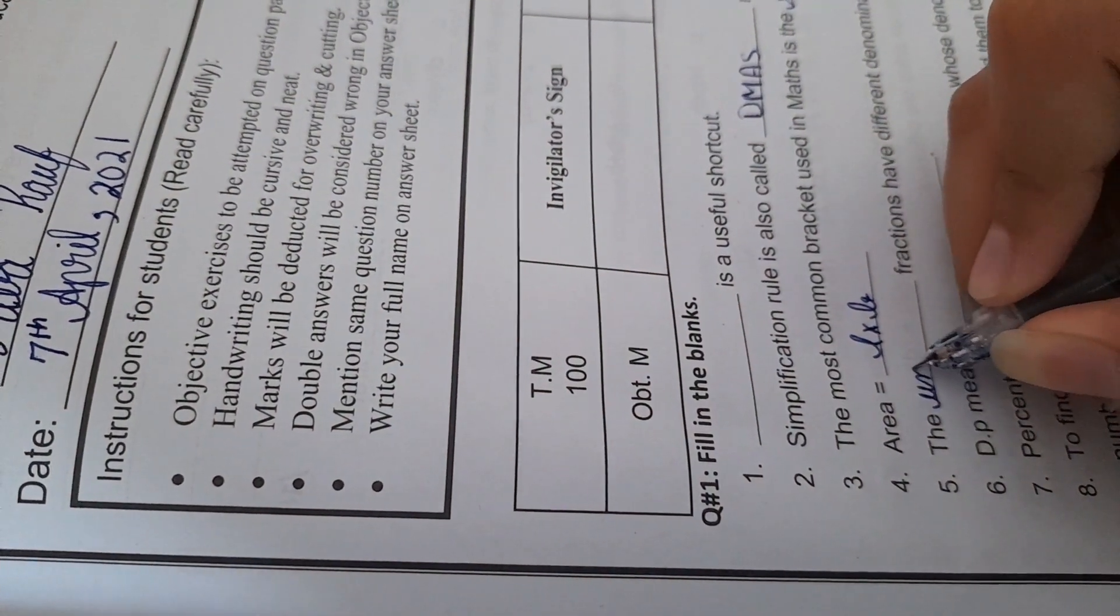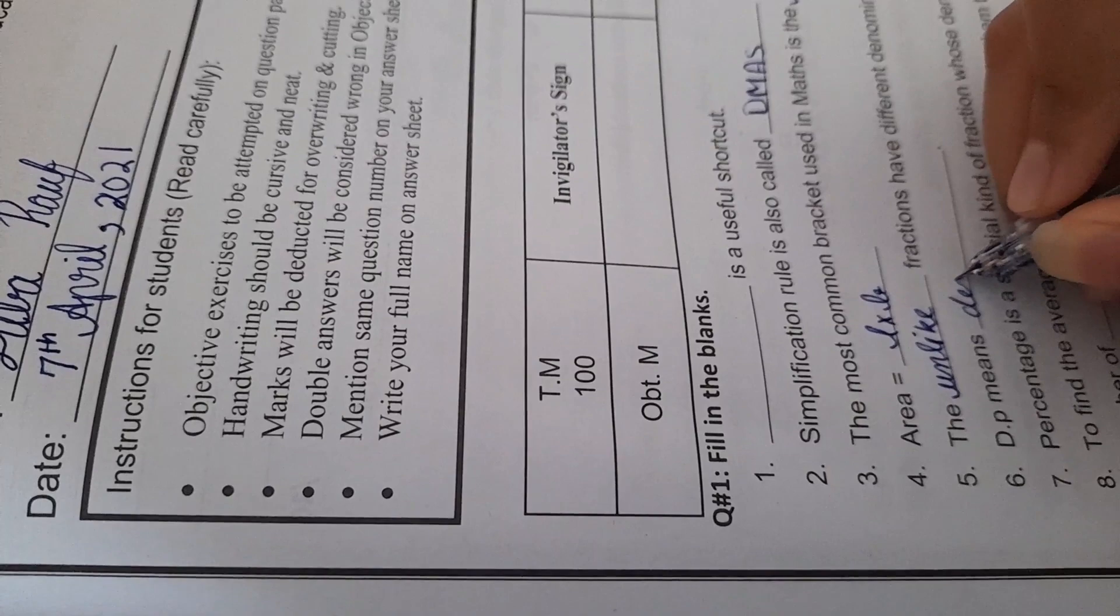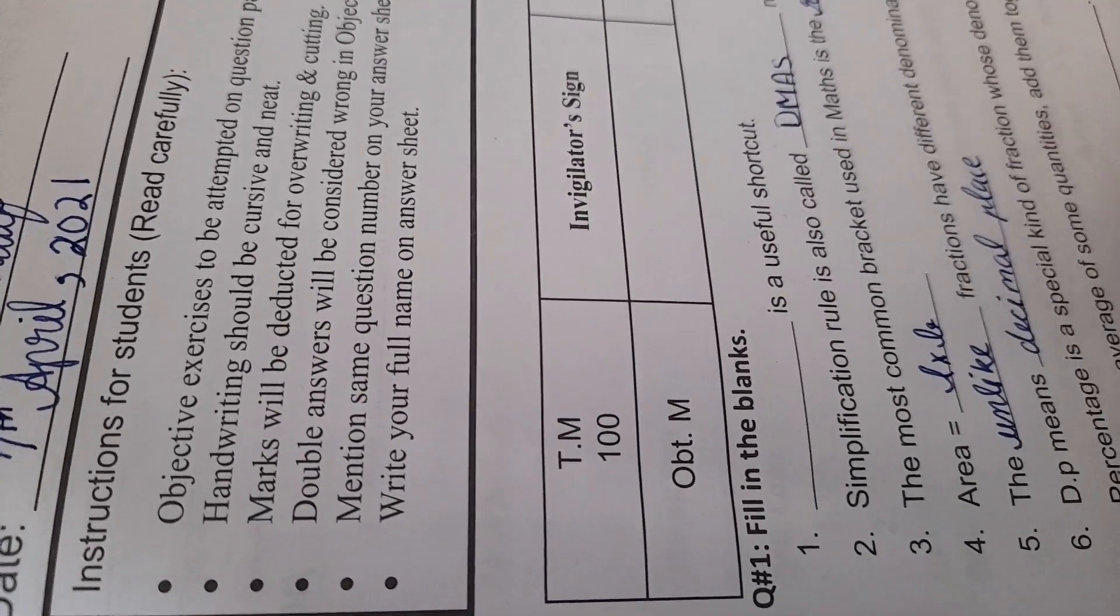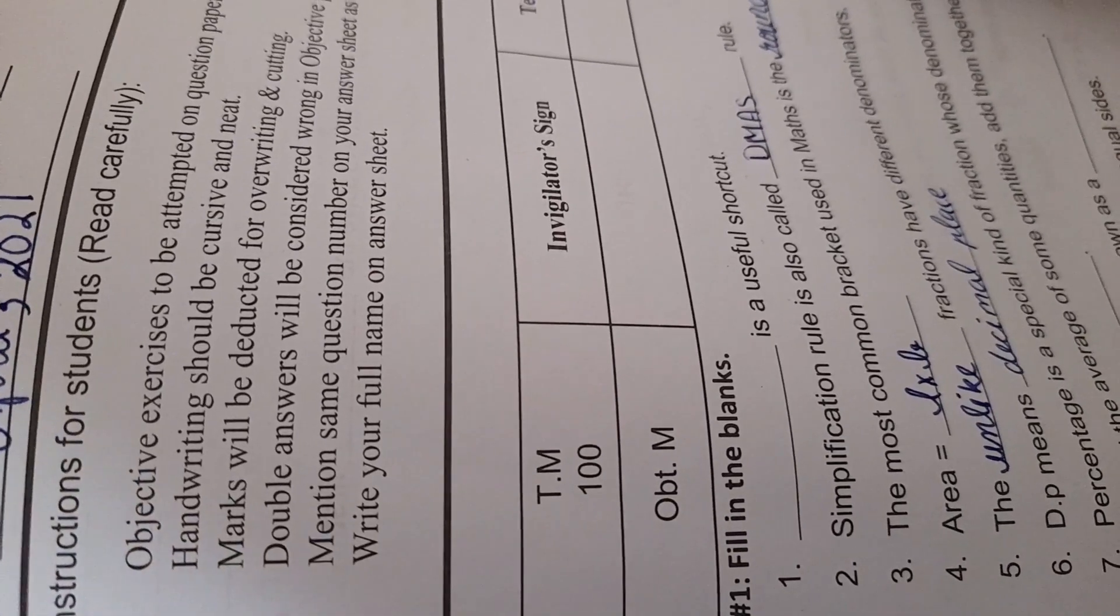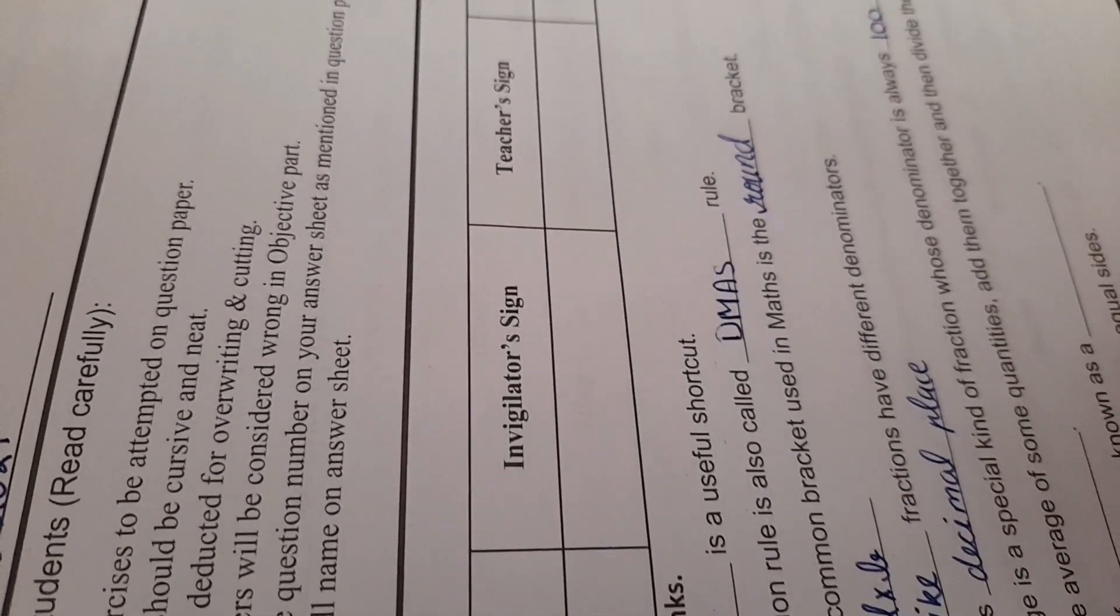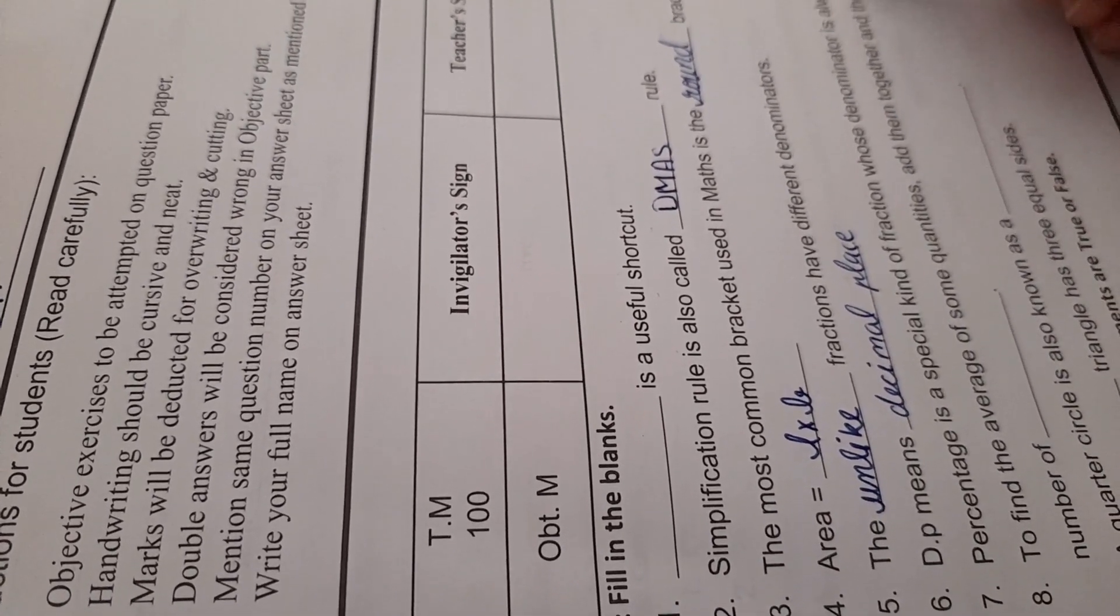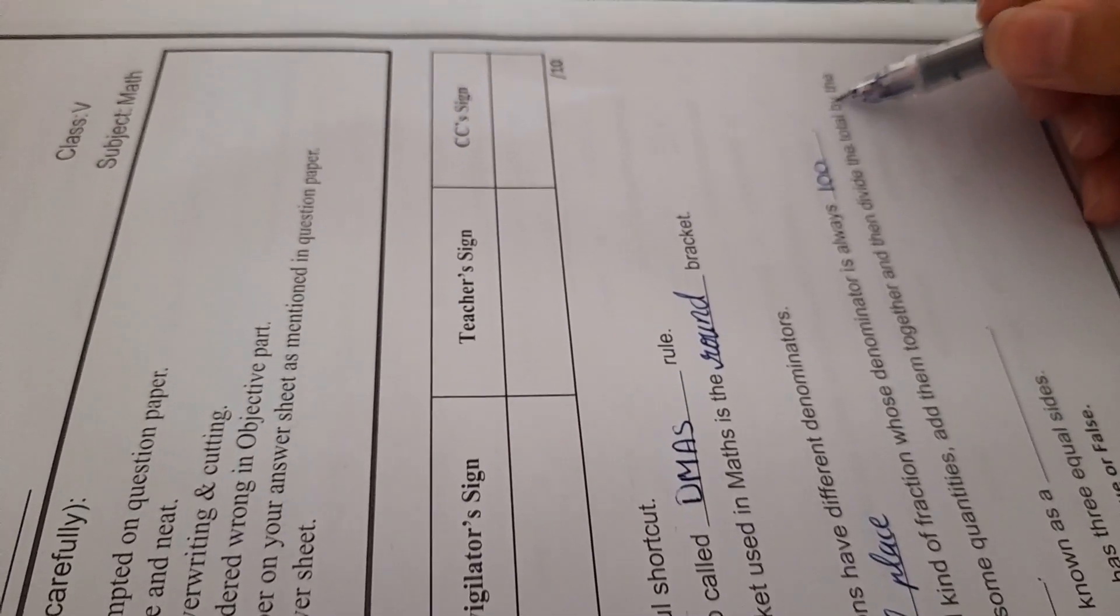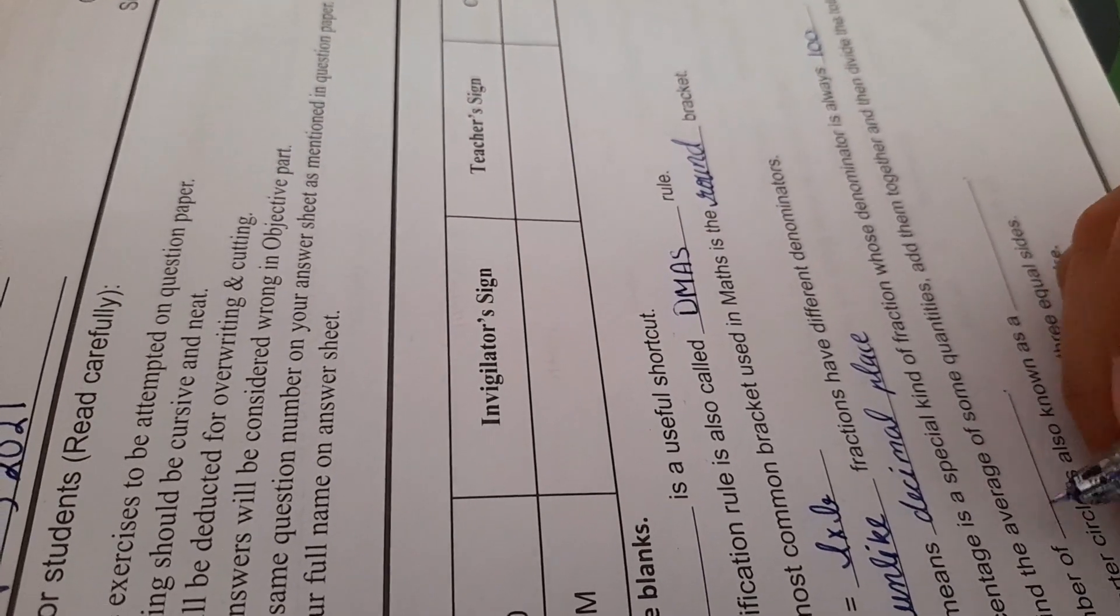The unlike fractions have different denominators. DP means decimal place. Percentage is a special kind of fraction whose denominator is always 100. To find the average of some quantities, add them together and then divide the total by the number of addenda.